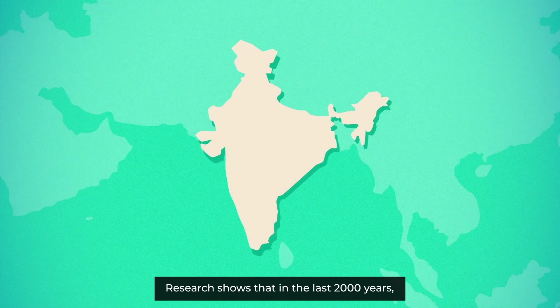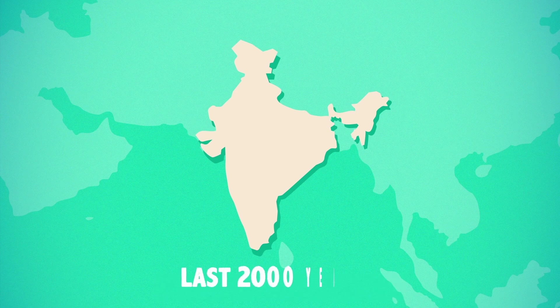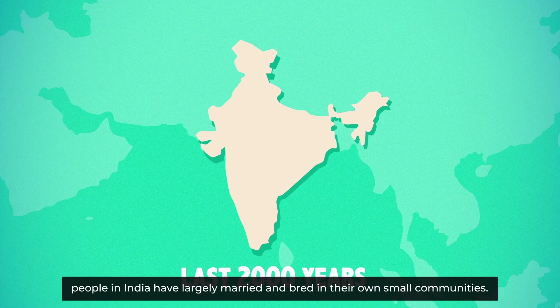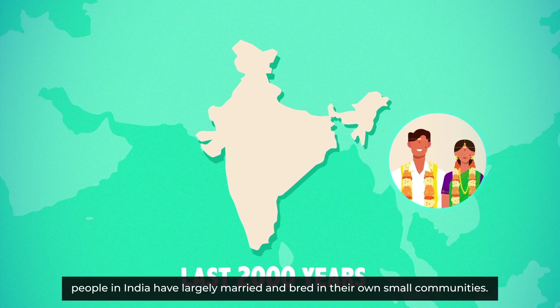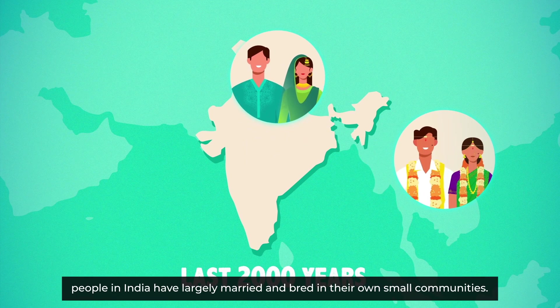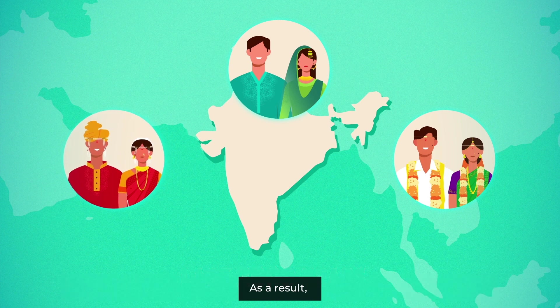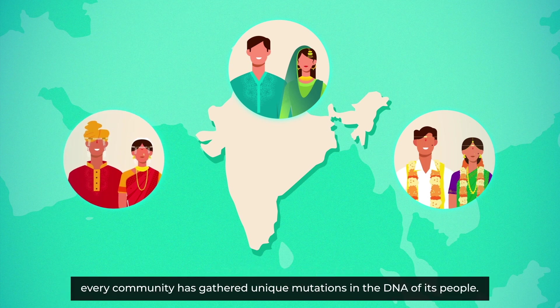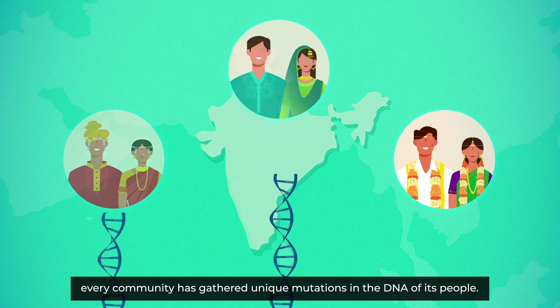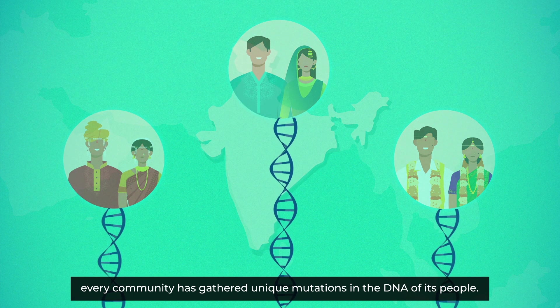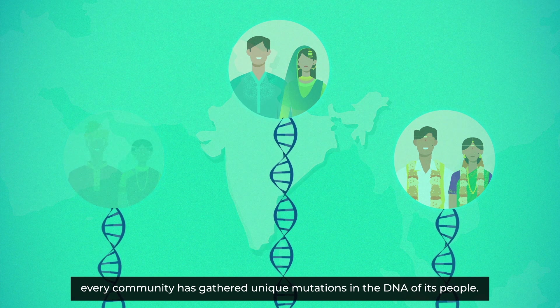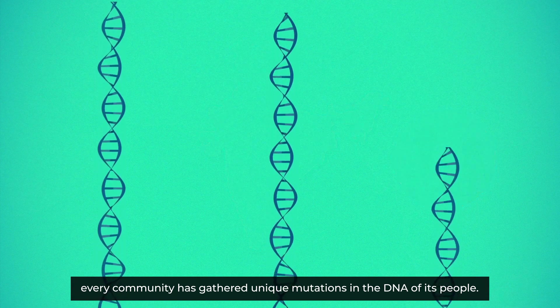Research shows that in the last 2000 years, people in India have largely married and bred in their own small communities. As a result, every community has gathered unique mutations in the DNA of its people.